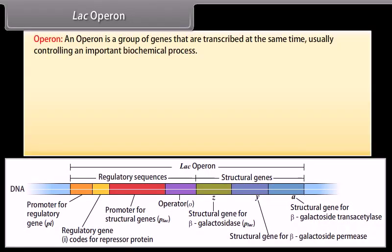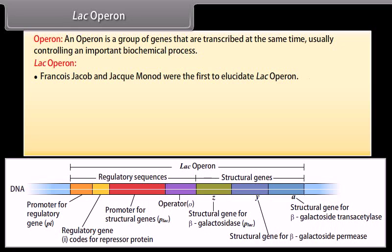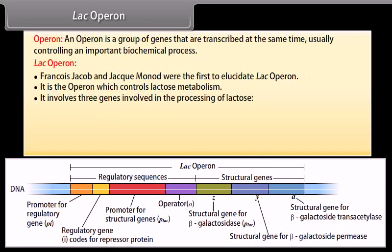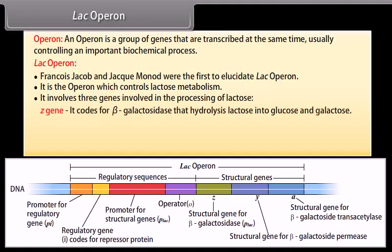Lac Operon. An operon is a group of genes that are transcribed at the same time, usually controlling an important biochemical process. Lac operon was first elucidated by Francois Jacob and Jacques Monod. It is the operon which controls lactose metabolism. It involves three genes: the Z gene, which codes for beta-galactosidase that hydrolyzes lactose into glucose and galactose.